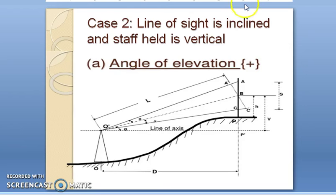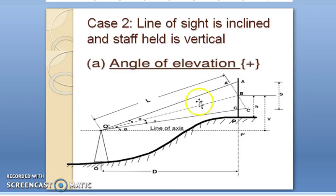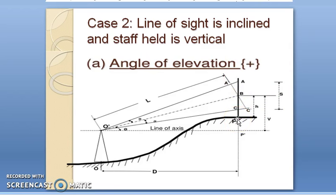Now for Case 2, where the line of sight is inclined and the staff is held vertically. In the figure, o-dash represents the telescope point, the instrument station is o, and points a, b, and c are marked on the leveling staff. Points a, b, and c represent the readings corresponding to the top, bottom, and middle hairs. Here l is the distance along the line of sight to point b, h is the height from the ground to b, and v is the vertical distance between a and c.